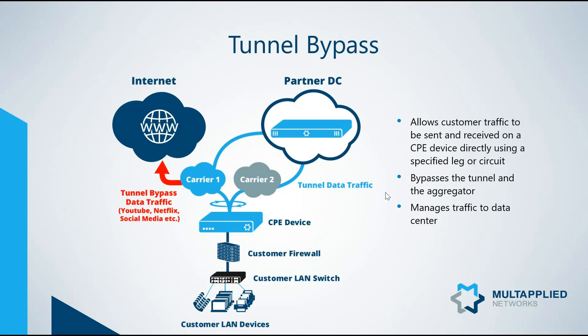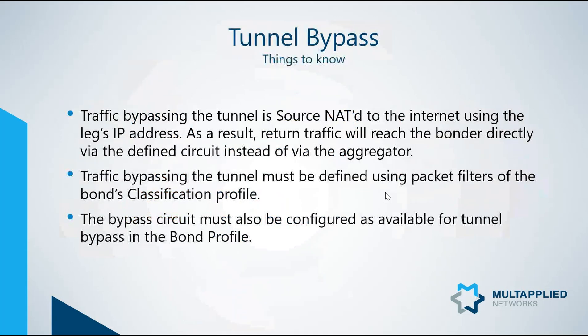You're probably saying, what can I do with this? Things to know about tunnel bypass: tunnel bypass is source NATed, meaning we use the circuit's IP address that we have defined as our tunnel bypass, and we run all the defined traffic out that circuit. Return traffic comes back through that to the appropriate socket or customer application running on the LAN. In order to set this up, you need to define a packet filter for the particular customer — it's called a classification profile — and we will build that classification profile a little later.